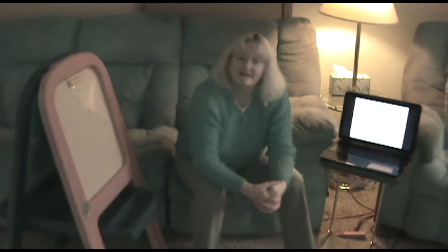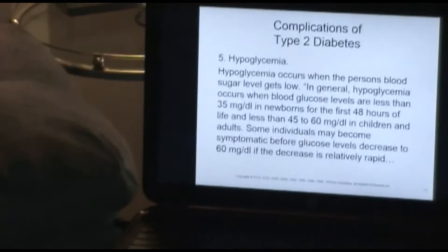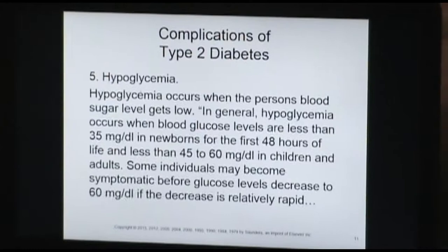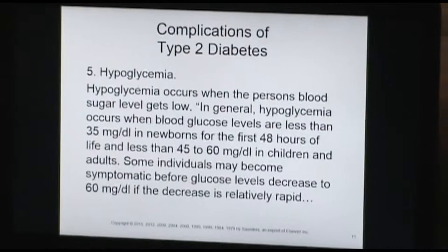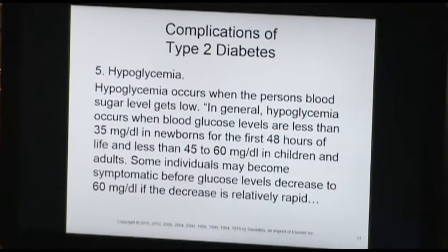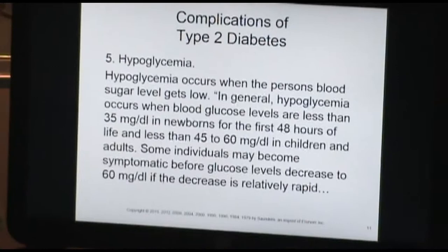The fifth complication is hypoglycemia. Hypoglycemia occurs when the patient's blood sugar gets too low. A blood sugar below 40, or between 45 and 60, is considered hypoglycemic. Symptoms usually start to occur after blood sugar drops below 60, but can occur at higher levels if there has been a rapid drop in blood sugar. This is more common in type 1 diabetics who are insulin dependent, but it is something seen frequently in the hospital with type 2 diabetics as well.